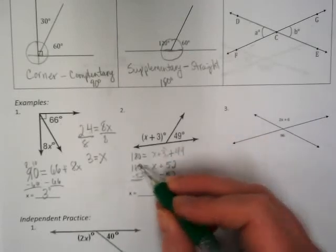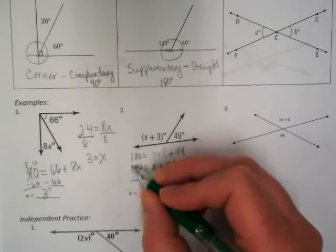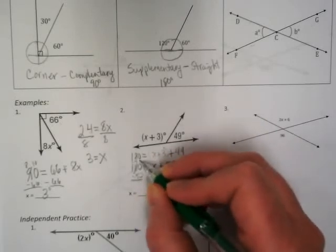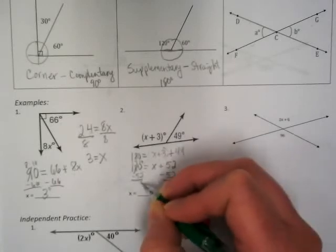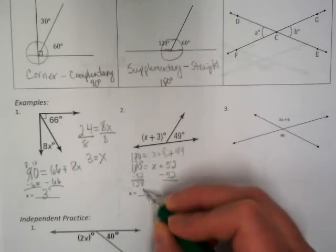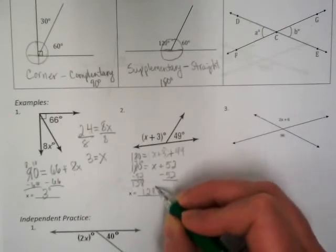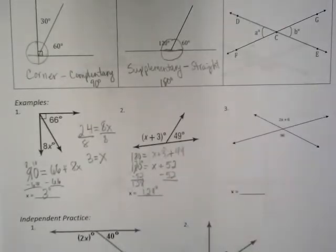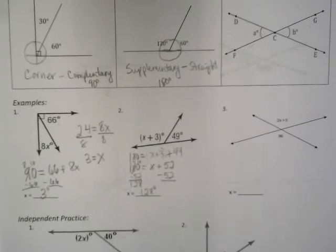And I get, I'm going to have to borrow again. So I have 7 and 10. 10 minus 2 is 8. 7 minus 5 is 2, and I still have the 1. 128 degrees is my answer. Okay.